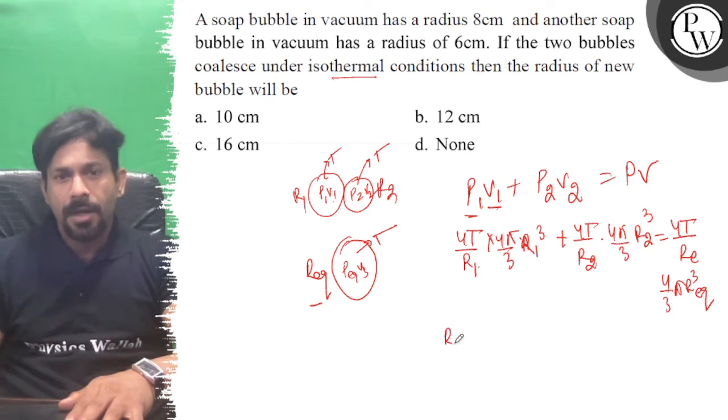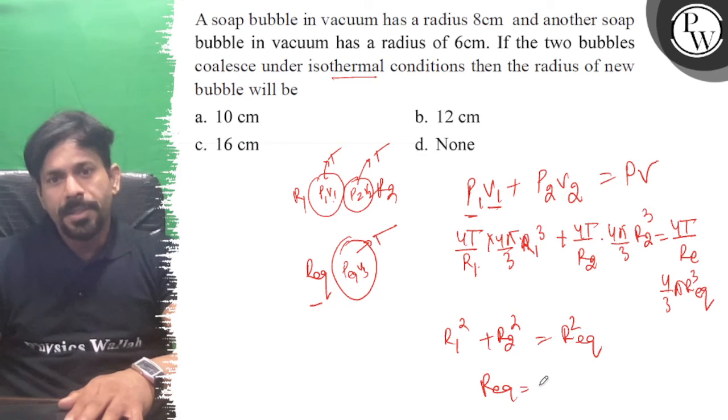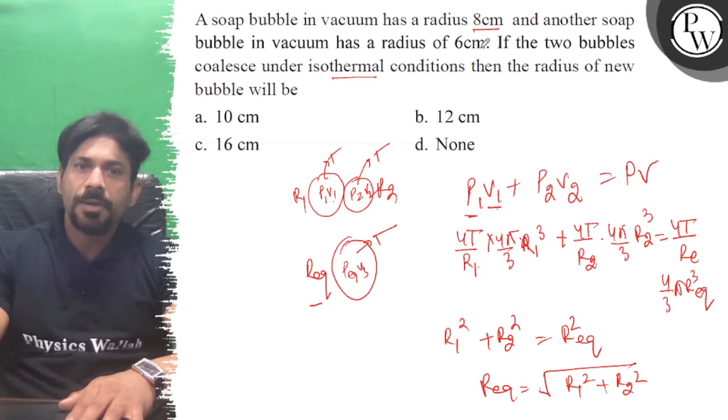Okay, so here we write R1 square plus r2 square is equal to r equivalent square. So R equivalent is equal to the root of r1 square plus r2 square.